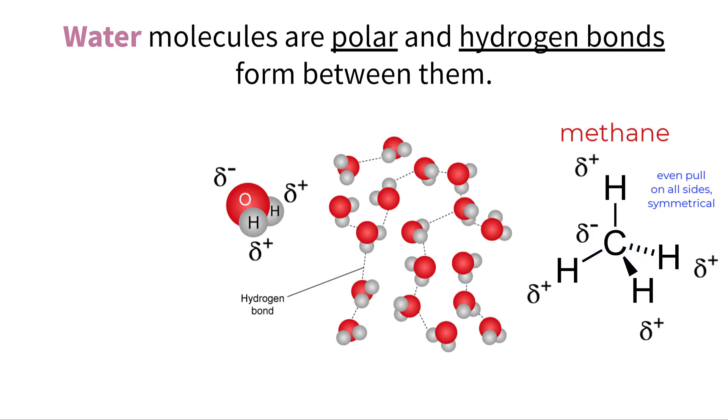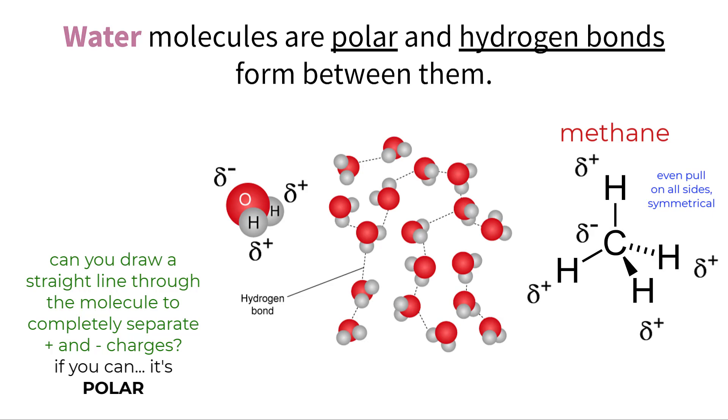An easy way to tell if a molecule is polar is to ask yourself: can I draw a straight line through this molecule and have all positive charges on one side and all negative charges on the other? If you can do that, the molecule, or at least that part of the molecule, should be polar. We can see that the line can be drawn through the water molecule to separate the charges, but there is nowhere I can accomplish that with the methane molecule, which means it is nonpolar.